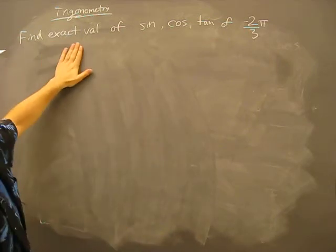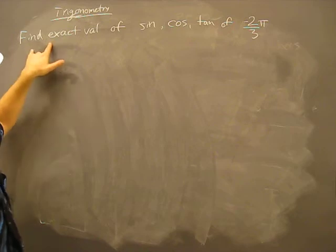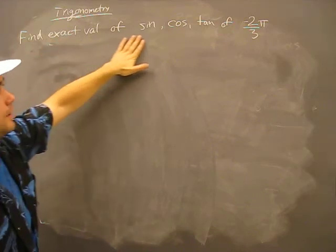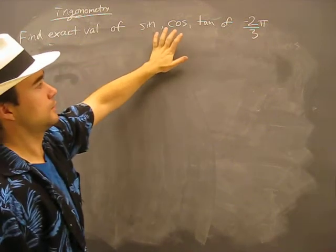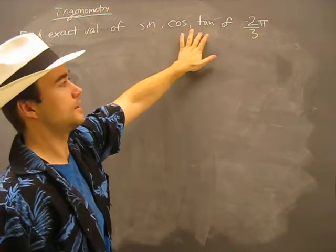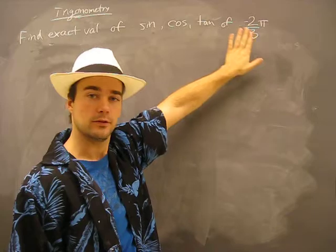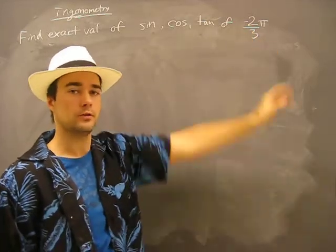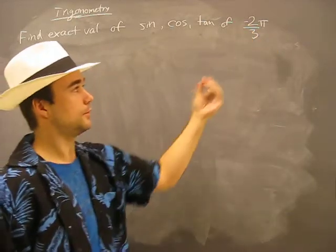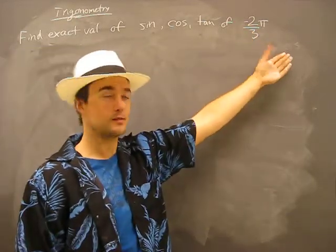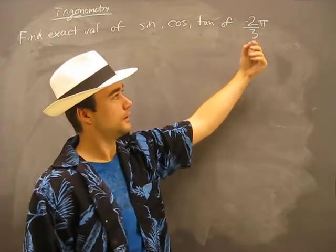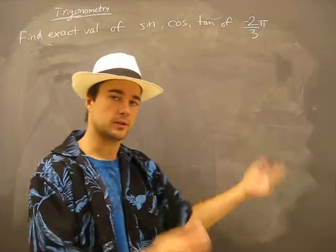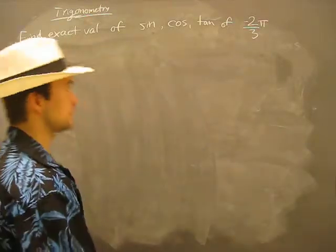Here's an example of what we're going to do. Find the exact value of sine, cosine, and tangent of negative two-thirds pi. This means radians because it doesn't say a unit, so we assume it's radians.